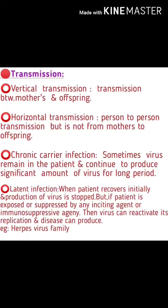Routes of transmission: vertical transmission — transmission between mothers and offspring. Horizontal transmission — person-to-person, but not from mother to offspring. Chronic carrier infection — the virus remains in the patient and continues to produce significant amounts of virus for a long period. Latent infection — the patient initially recovers and virus production stops, but if exposed to an inciting or immunosuppressive agent, the virus can reactivate. Example: Herpes virus family.